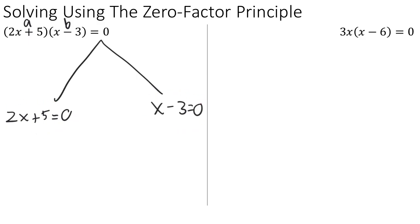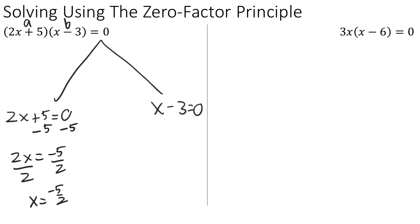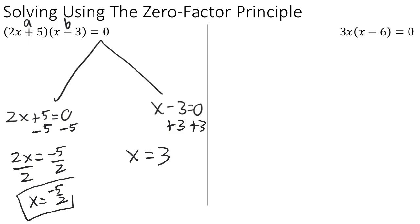Let's solve them. If 2x + 5 = 0, we subtract 5 from both sides to get 2x = −5, then divide by 2 to get x = −5/2. That's one possible value of x. For the second equation, x − 3 = 0, we add 3 to both sides and conclude x = 3. So there are two solutions to the original equation: x = −5/2 and x = 3.